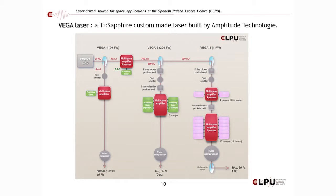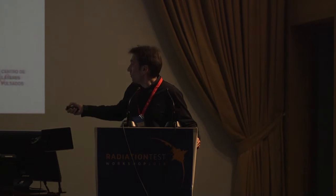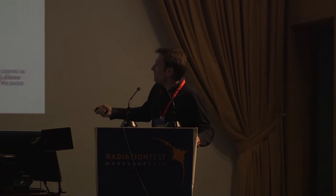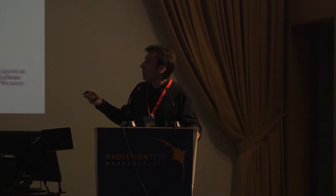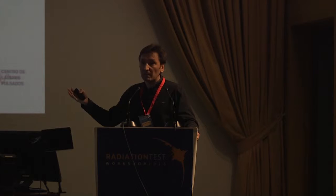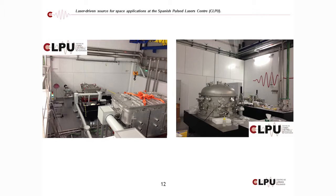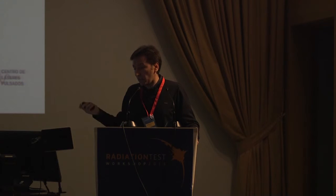One hertz repetition rate for a petawatt laser — as we saw, the technology is still growing and we expect further improvements in the near future. This is what the petawatt laser in Salamanca looks like — something like 20 meters long, housing the three stages: terawatt and petawatt. This photograph shows the current state of the facility.